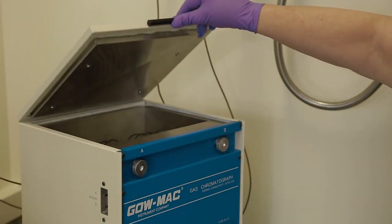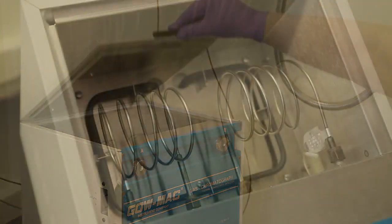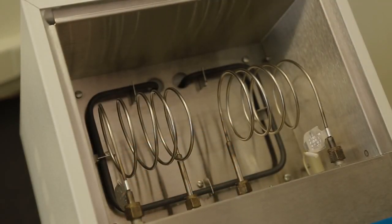A gas chromatograph is an instrument with a long column filled with small particles coated with a very thin layer of an adsorbent. This layer is the stationary phase of the column.